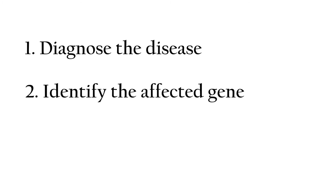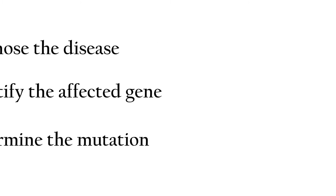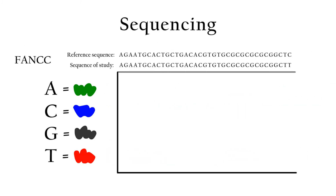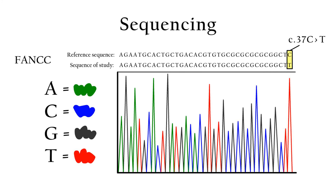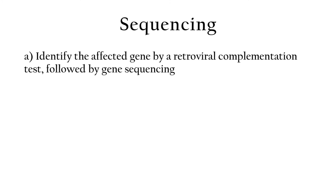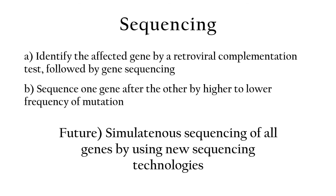Now we know how to diagnose Fanconi anemia and even how to identify the disrupted gene. But what if we want to go further? It's not only necessary to determine the disrupted gene, but also to identify the mutation that disrupts the gene. To achieve that, the disrupted Fanconi gene is sequenced and compared to a DNA sequence of a healthy person. Knowing the affected gene is very useful, but we may also skip the retroviral complementation test and analyze genes by higher to lower frequency of mutation. In the near future, we will even be able to analyze all the Fanconi genes at once by using new sequencing technologies.